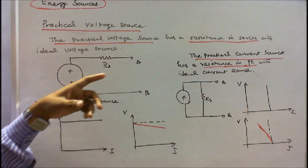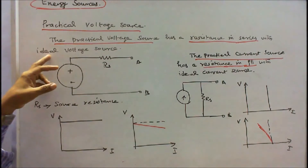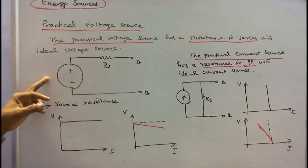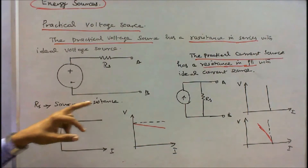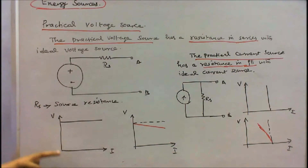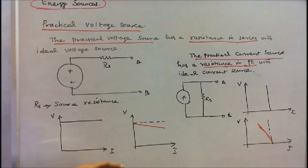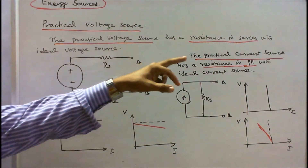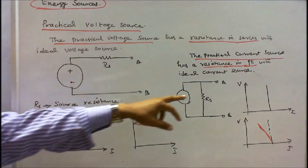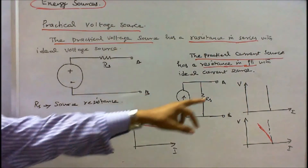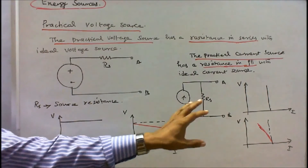Now we look at practical voltage and current sources. A practical voltage source has a resistance connected in series with the ideal voltage source; this series resistance RS is called the source resistance. The VI characteristics of an ideal voltage source and a practical voltage source are different. This is the VI characteristics of a practical current source.